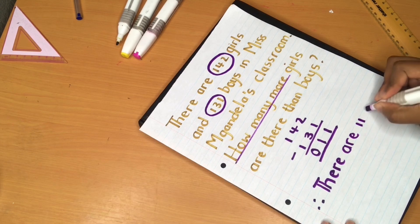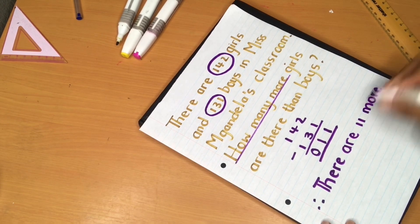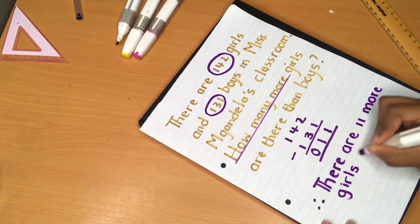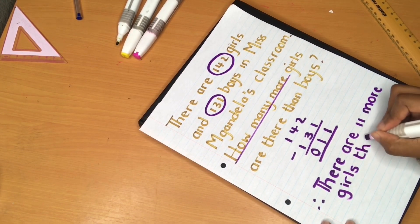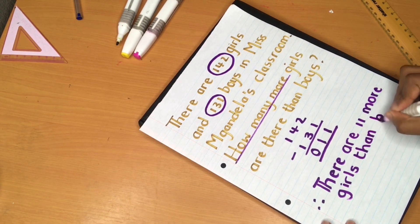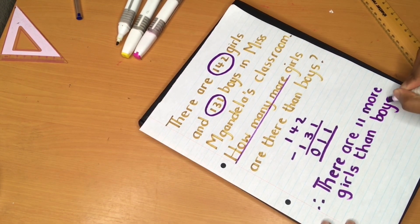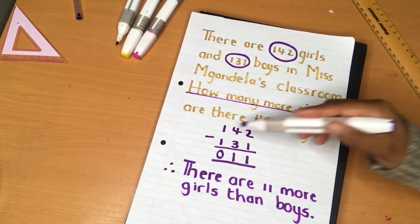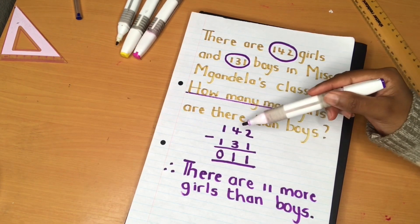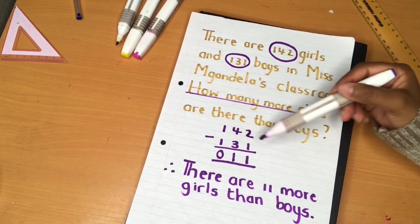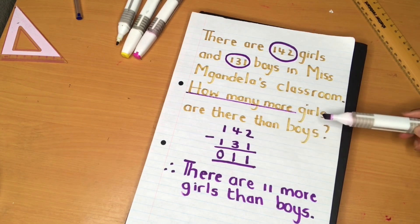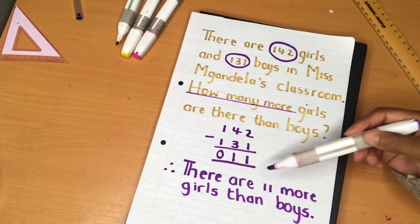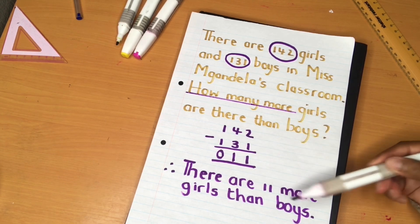So therefore there are 11 more girls than boys. We've shown our sum: 142 minus 131 equals 11, and we've answered our word problem — how many more girls are there than boys? There are 11 more girls than boys.